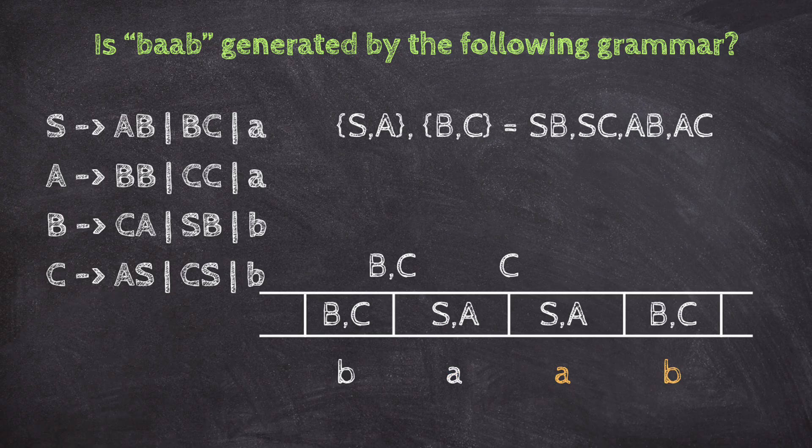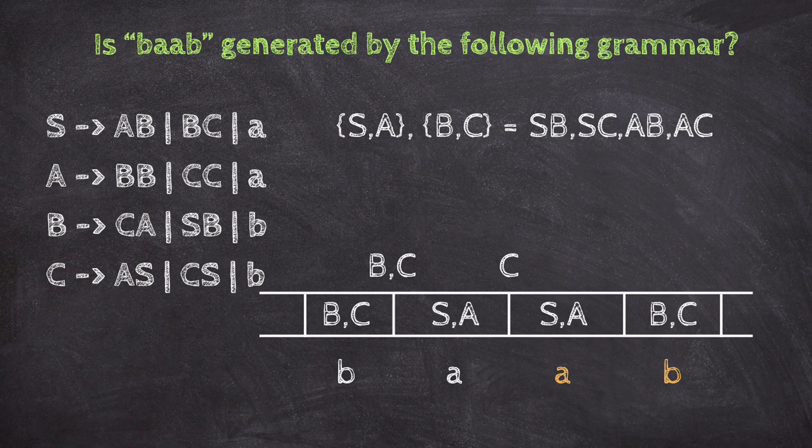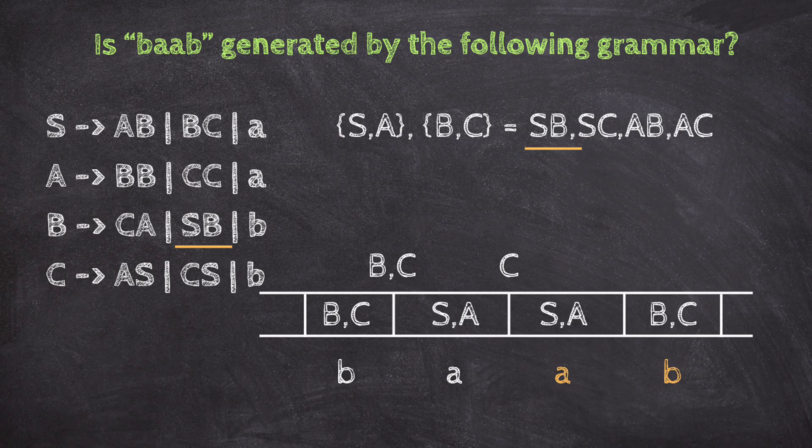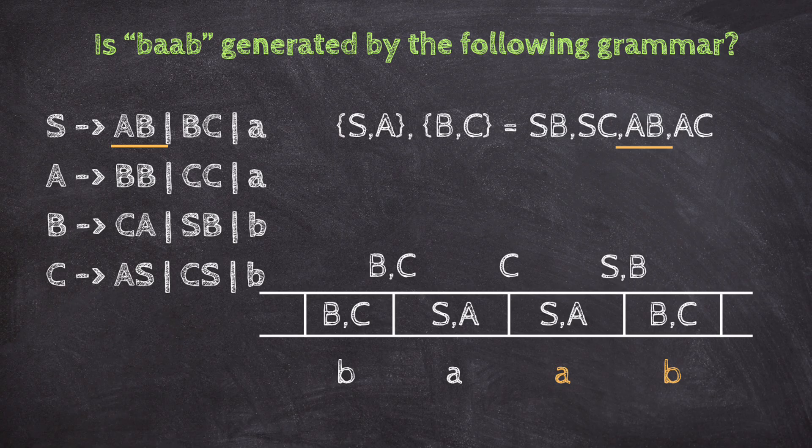For AB, S, A from A, and B, C from B, combine to SB, SC, AB, and AC. Looking at the grammar, B goes to SB, so B goes above. S goes to AB, so S goes above. No other matches, so above AB, we write B and S.